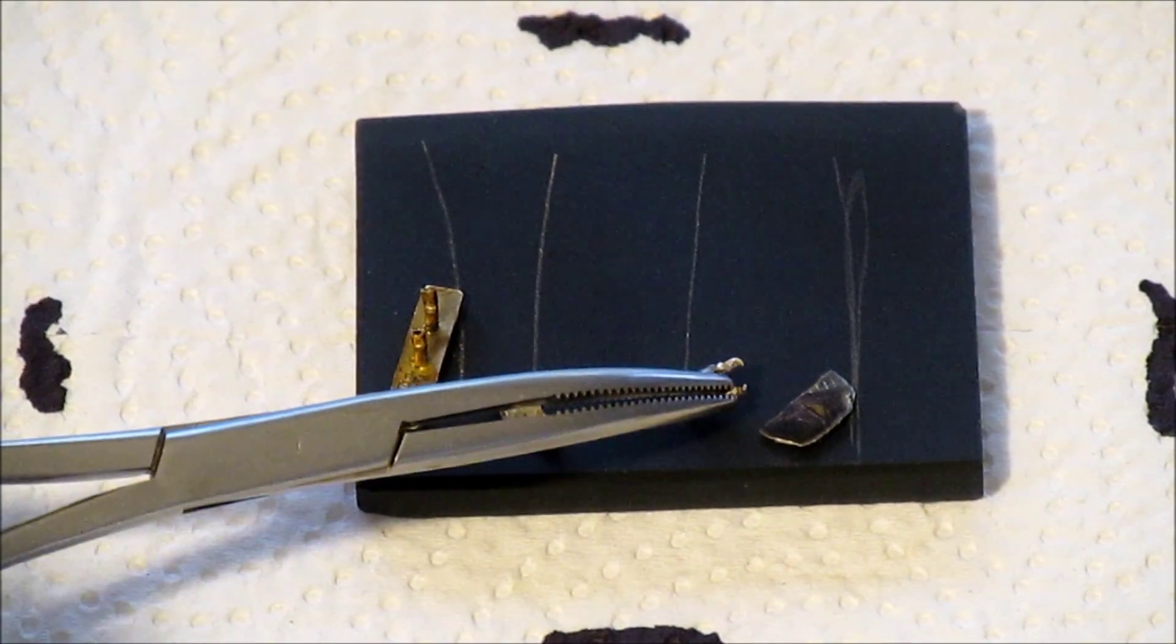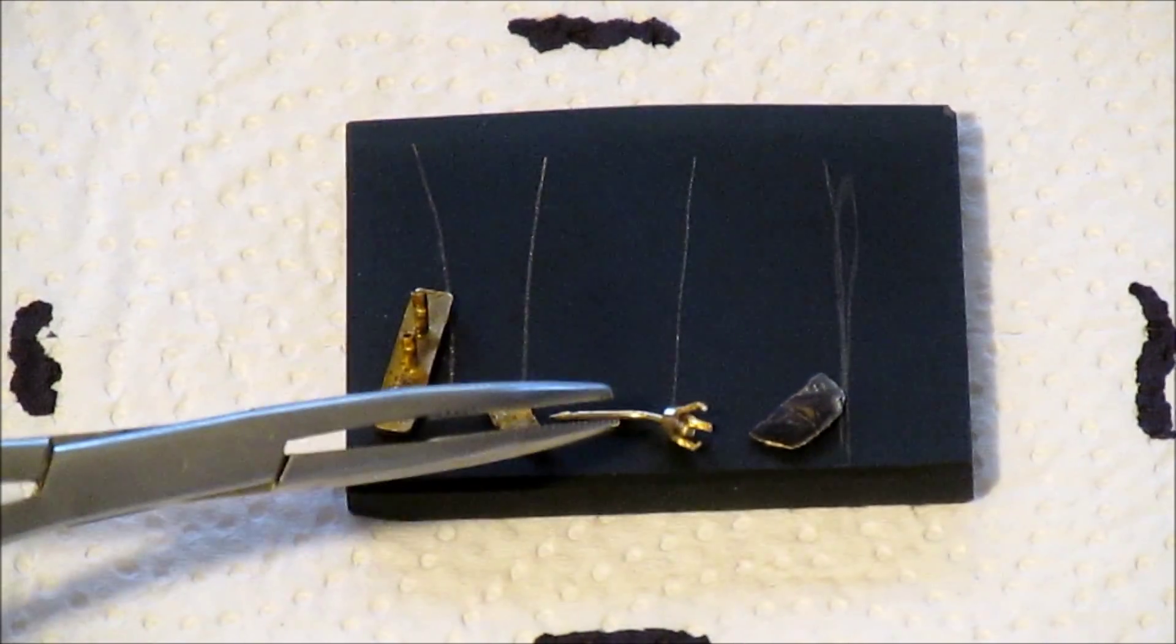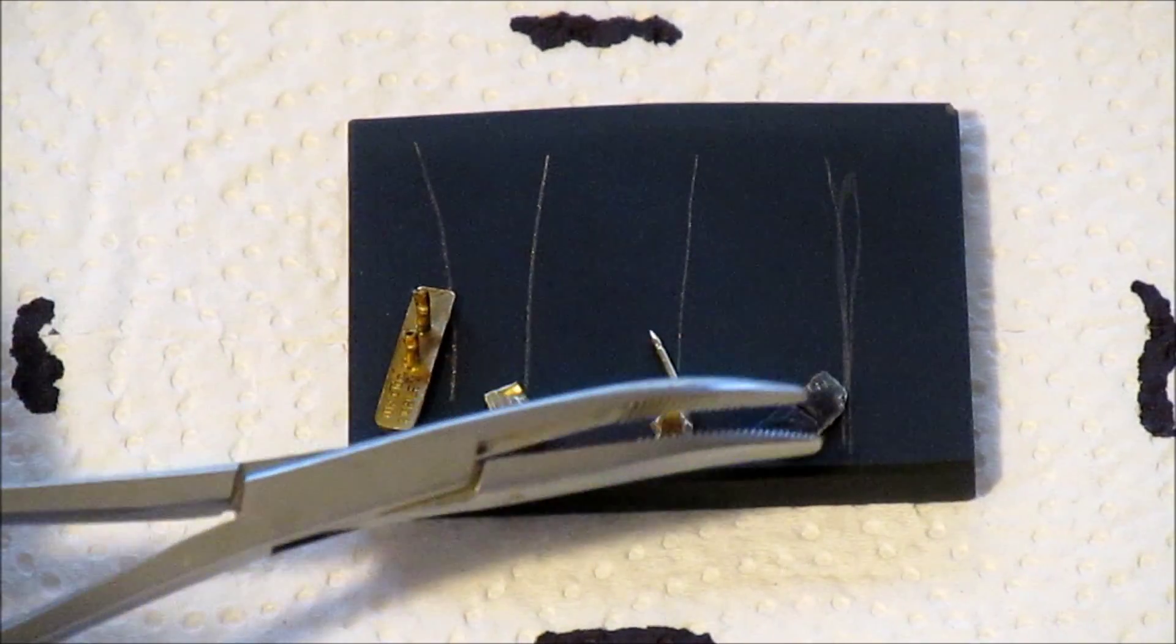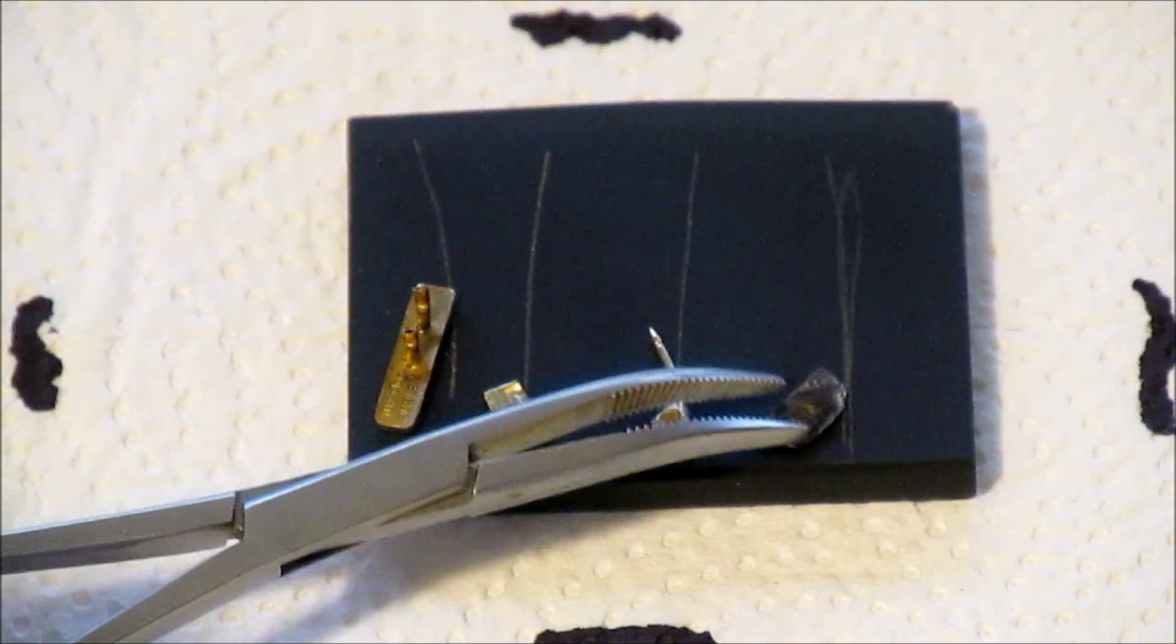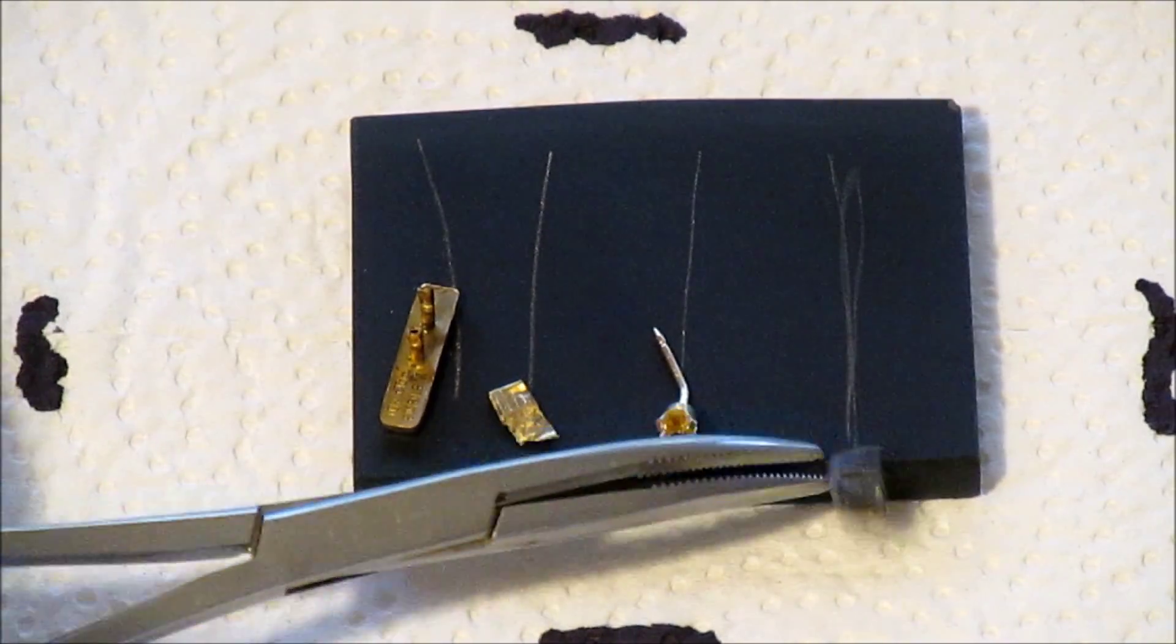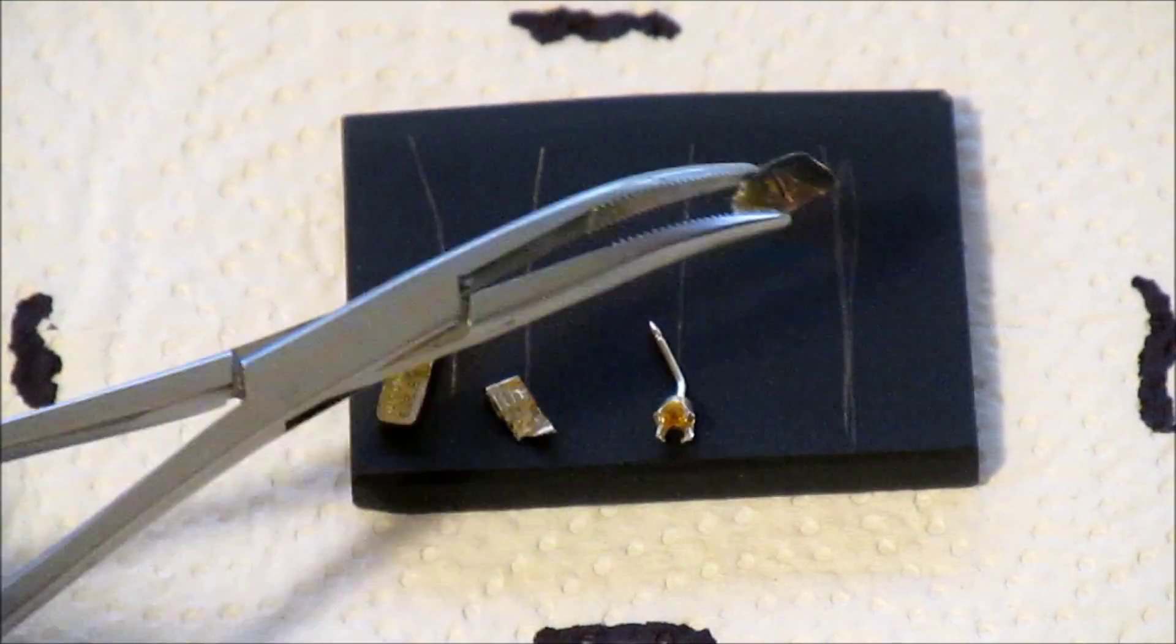14 karat is 58.3 percent gold. And this piece came out of a ring and isn't marked—we're going to acid test them to figure out what the unmarked ones are.